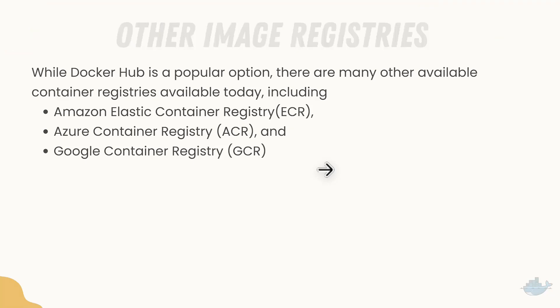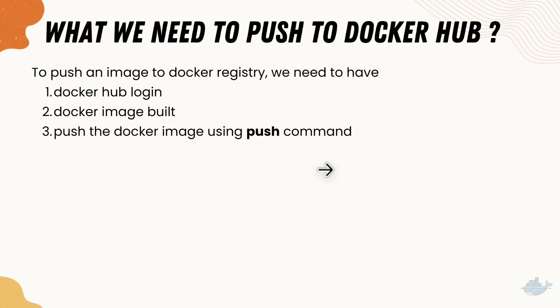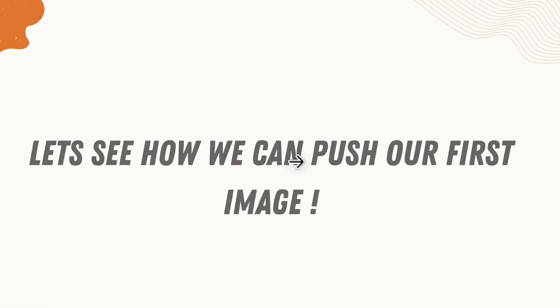Now let's understand what we need to work with Docker Hub to push an image. We're going to first create a Docker Hub login, then build a Docker image, and then push it using the push command. Building an image we already did in our last lecture. Later in this series we'll discuss building images from scratch using a Dockerfile and working with multi-layered Docker images, but for now we'll use the image we built previously.